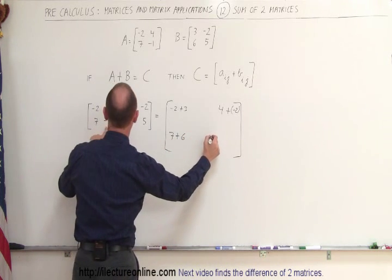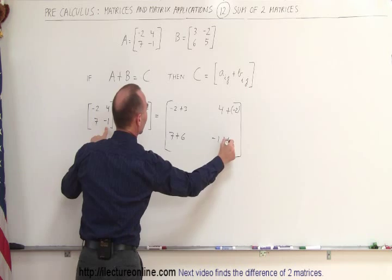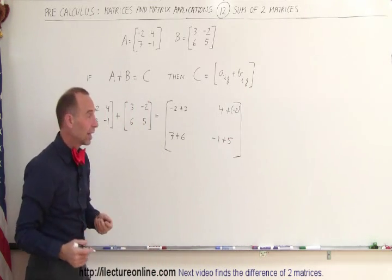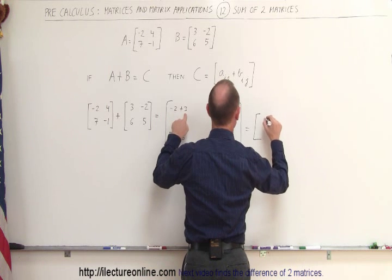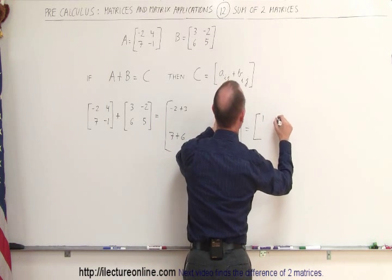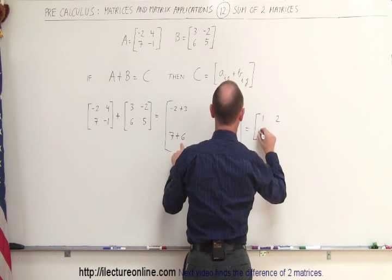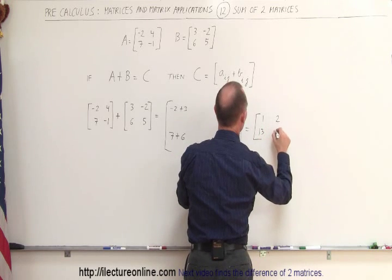And finally, the lower right corner will be minus 1 plus 5. And then we add those together, and we get the following, so this would be equal to, minus 2 plus 3 is 1, 4 plus a minus 2 is 2, 7 plus 6 is 13, and a minus 1 plus 5 is a positive 4,